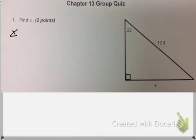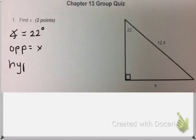I like to list out the information I have. I have my angle, which is 22 degrees. From that angle, I can see that I have the opposite, which is x, and the hypotenuse, which is across from the right angle, which is 12.4.